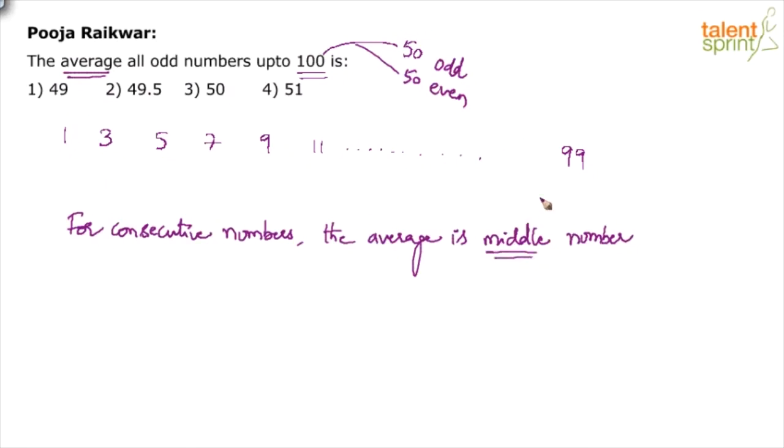But the point here is, since there are 50 odd numbers, there is no unique middle number available. If there are 49 numbers, I can say that the 25th number is the middle one. But if there are five numbers, the third number is the middle one. If there are nine numbers, the fifth number is the middle one. But in this case, since there are even number of numbers, there is no single middle number. There will be two middle numbers.